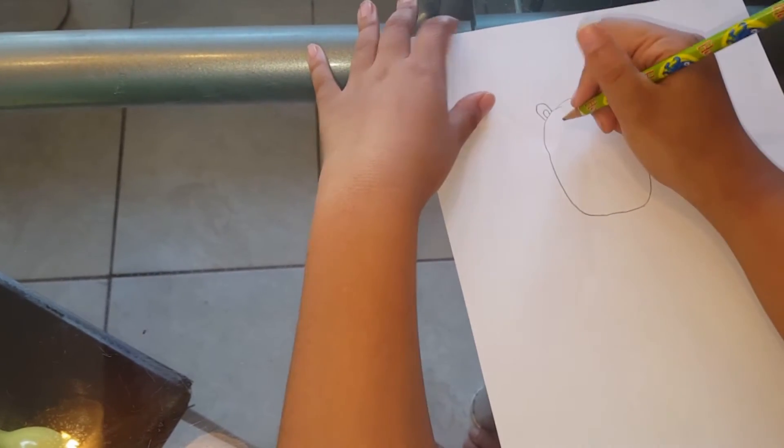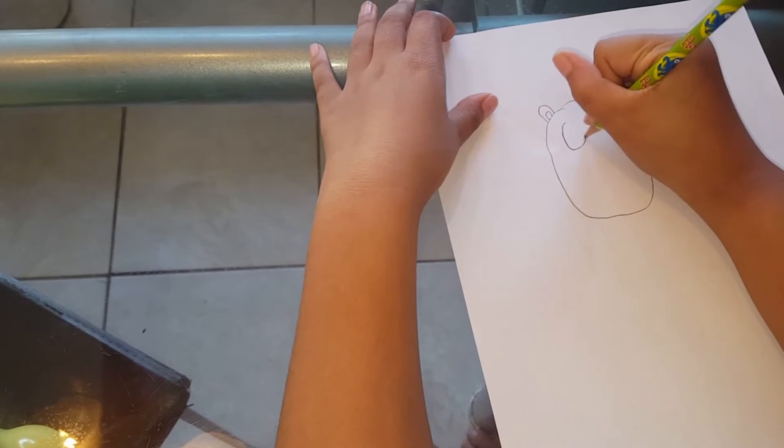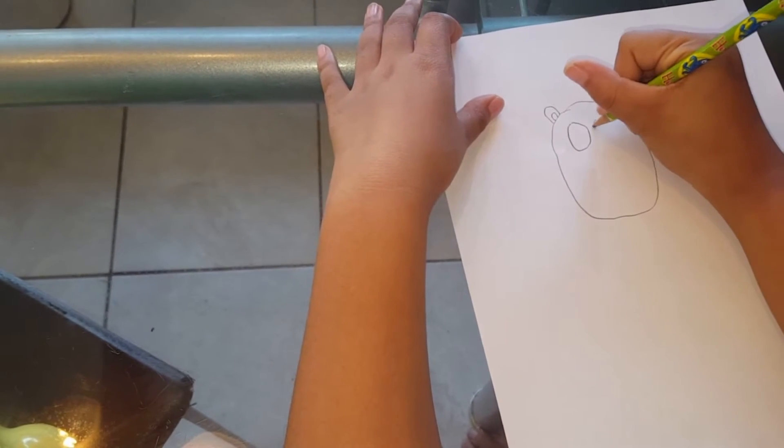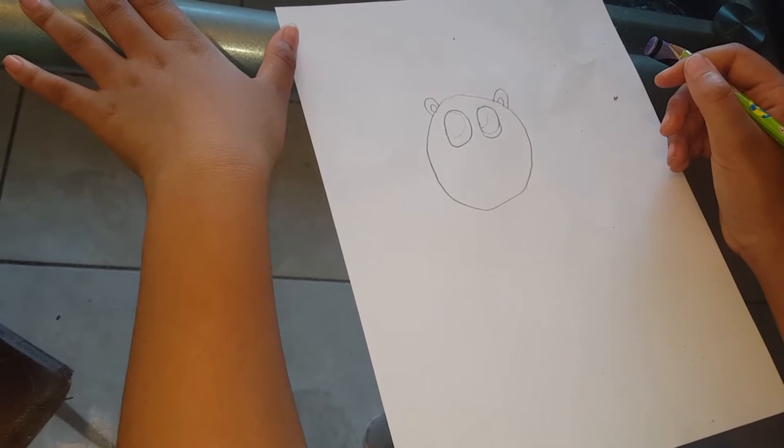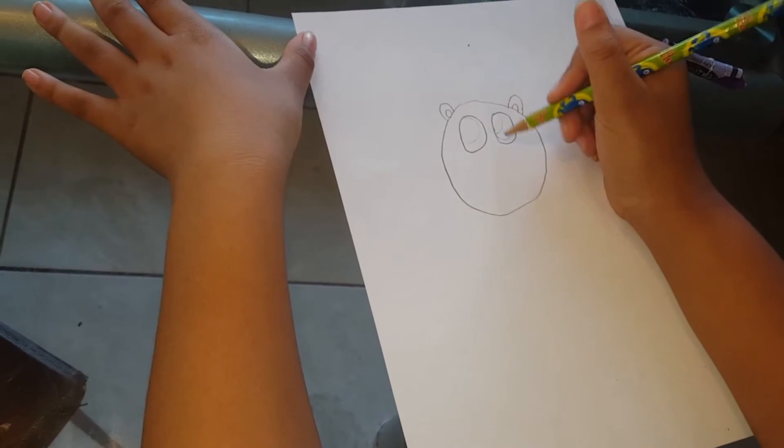And now we're going to draw some eyes. You just have to draw some circles and I like to make it big so it looks more cute. Okay, so right now we're just going to leave the circles blank.